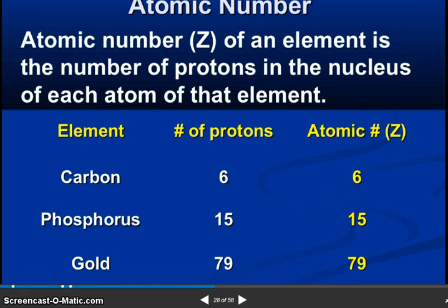So friends, the atomic number of an element is the number of protons in the nucleus of each atom of that element. You can see carbon, phosphorus, gold. Number of protons: 6, 15, 79. Atomic number: 6, 15, 79.